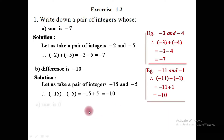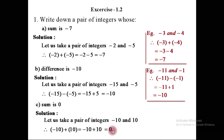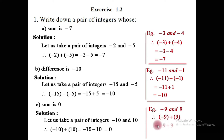Part c: take a pair of integers whose sum is 0. Taking a pair: minus 10 and plus 10. Taking the sum, removing brackets, we get minus 10 and plus 10. Opposite signs should be subtracted: 10 minus 10 gives 0. Another example: minus 9 and plus 9. Removing brackets gives minus 9 and plus 9; 9 minus 9 is 0, so the sum is 0.